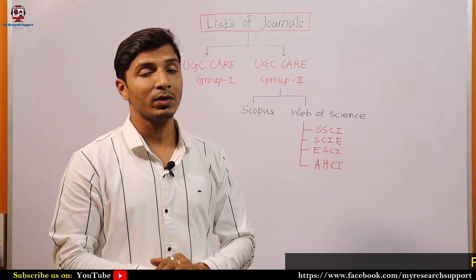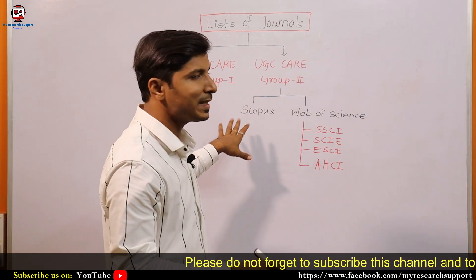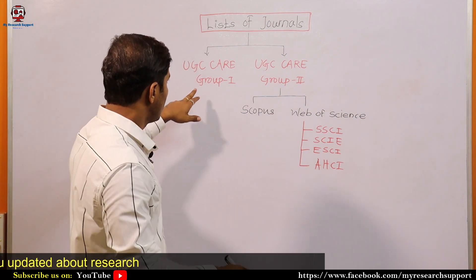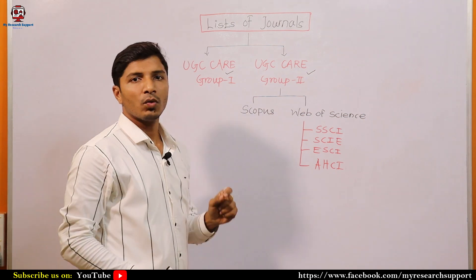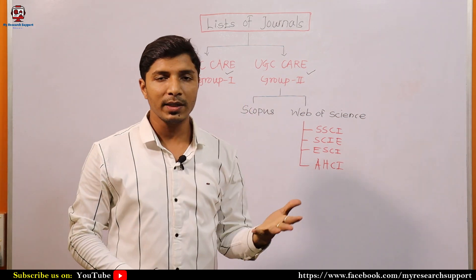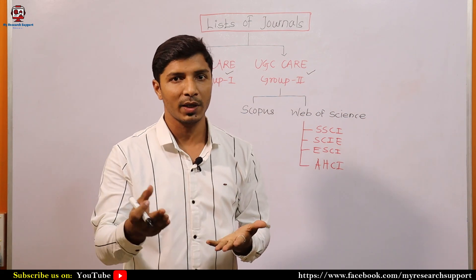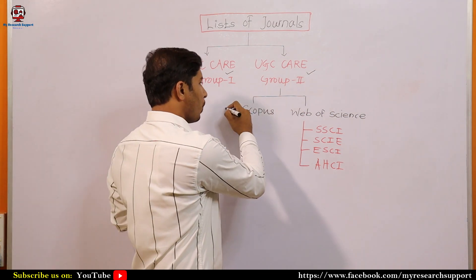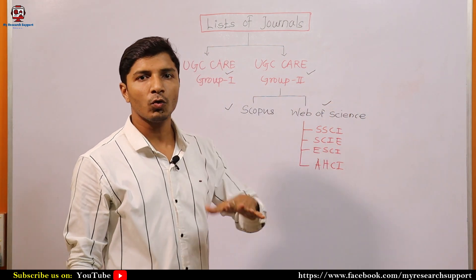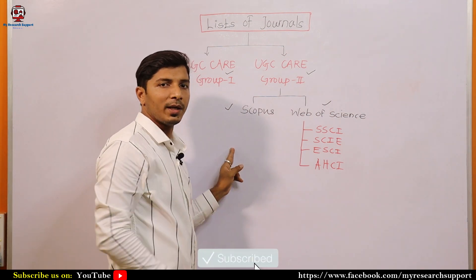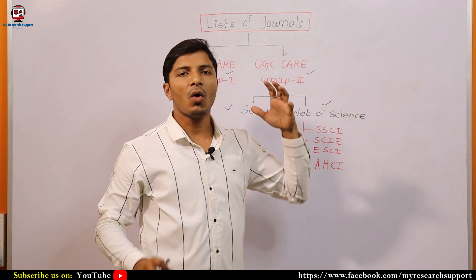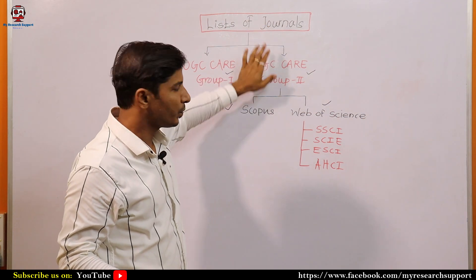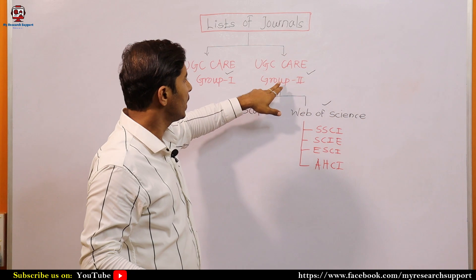Before moving to the download links, you should understand the basic difference between all these indexings. There are two groups: UGC CARE Group 1 and UGC CARE Group 2. All journals included in Scopus are by default included in UGC CARE Group 2, and all journals of Web of Science are also included in UGC CARE Group 2. To download the UGC CARE Group 1 list, you move towards the UGC CARE website.